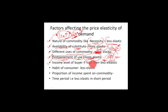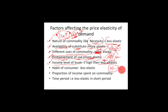Fifth factor is income level of the buyer: if high, then less elastic. If someone's income is very high, whether the price is 10,000 or 15,000 it will not make much difference to them — the price increase or decrease does not impact their demand significantly.